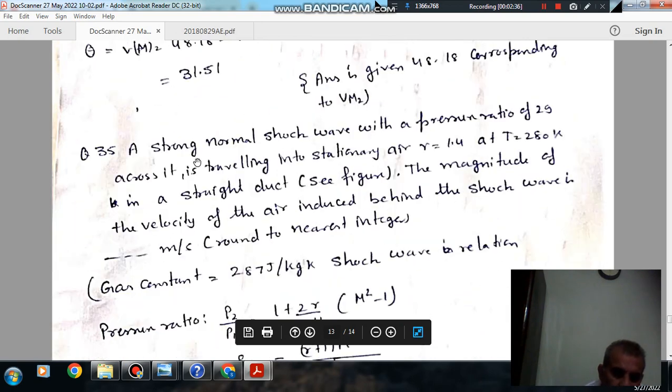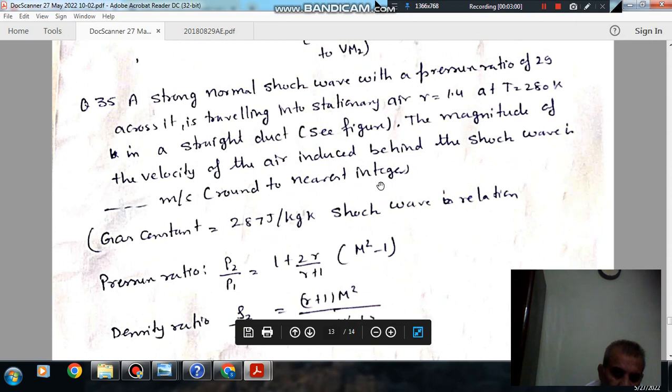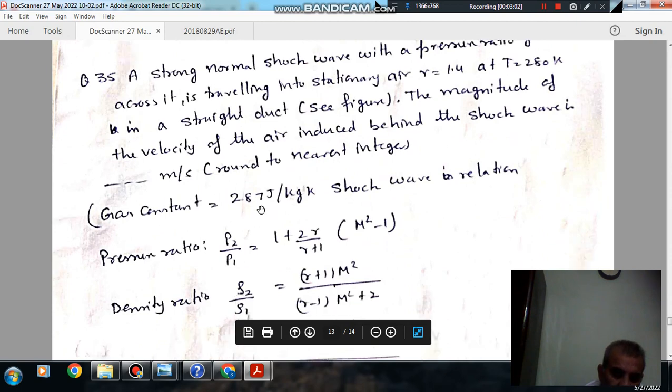Next, a strong normal shock wave with pressure ratio 29 across it is traveling in stationary air. Gamma equals 1.4 at T equals 280 Kelvin in a straight duct. The magnitude of velocity of air induced behind the shock wave is dash meter per second, round to nearest integer. Gas constant is 287 Joule per kg per Kelvin.